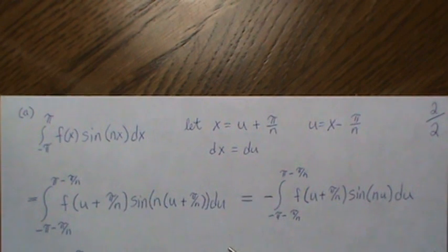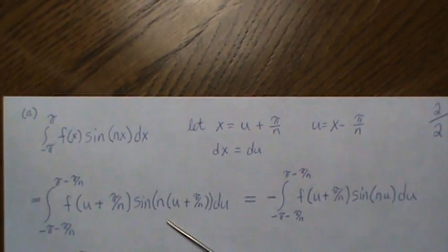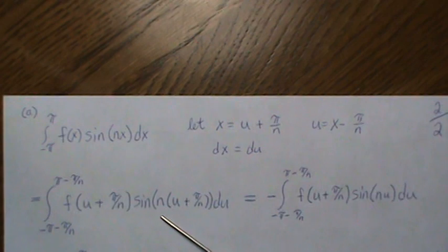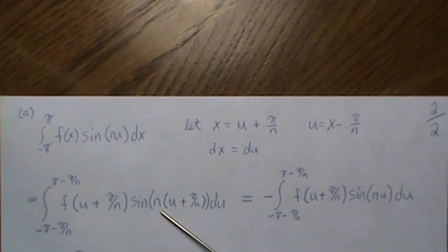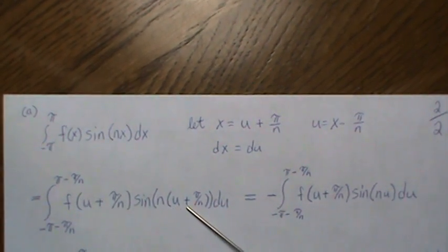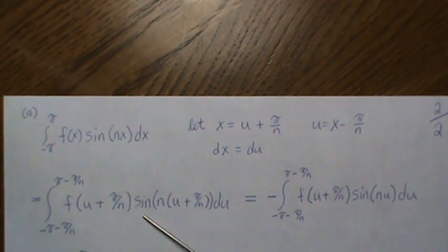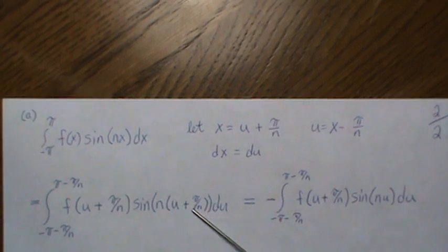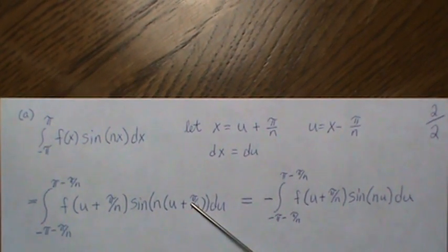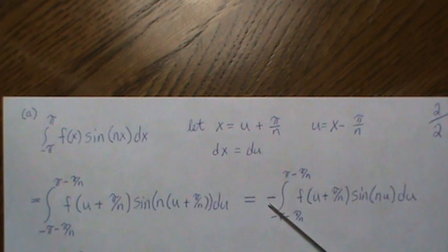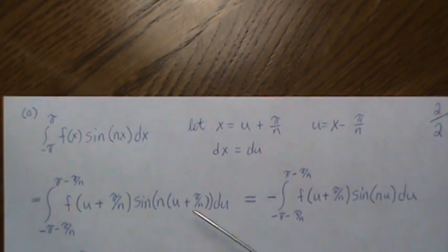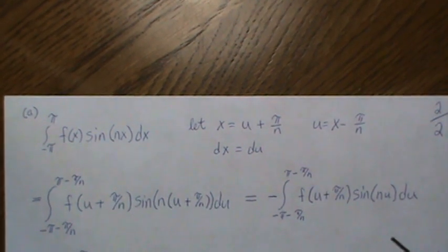To go from here to here we're purely looking at the sine function. What's in here is n(u + π/n), and when you add π to the angle of a sine function it actually makes it go negative, so if we take out that plus π then we have to put a negative out front.